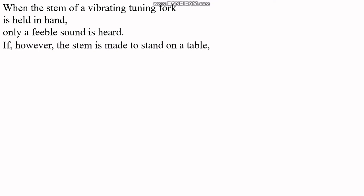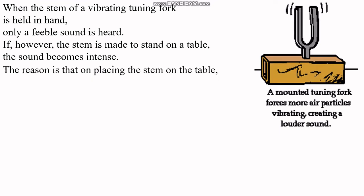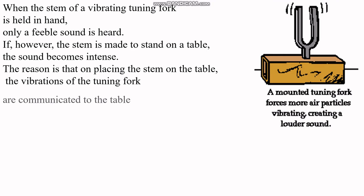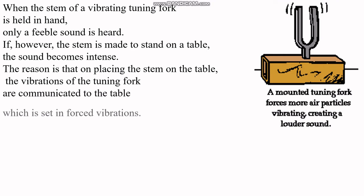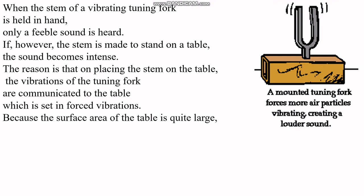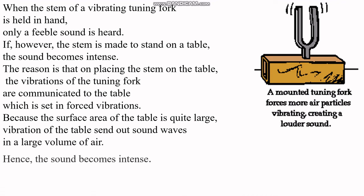Similarly, when the stem of a vibrating tuning fork is held in hand, only a feeble sound is heard. However, if the stem is made to stand on a table, the sound becomes intense. The reason is that on placing the stem on the table, the vibrations of the tuning fork are communicated to the table, which is set into forced vibrations. Because the surface area of the table is quite large, vibrations of the table send out sound waves in a large volume of air, and hence the sound becomes intense.